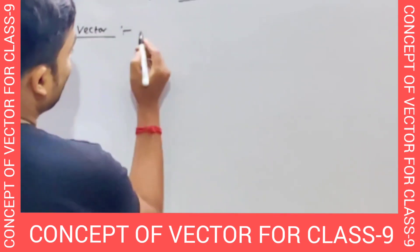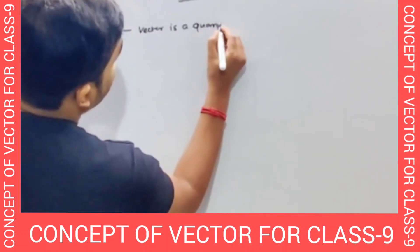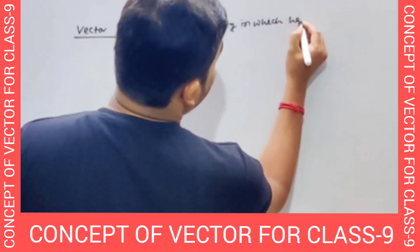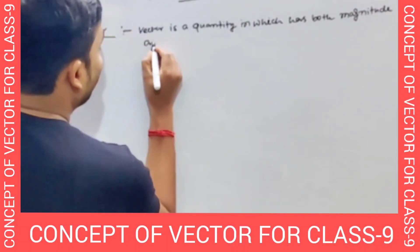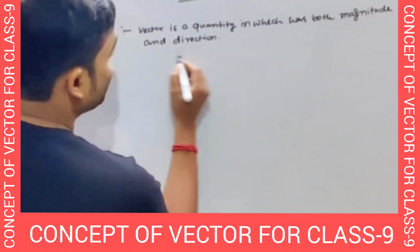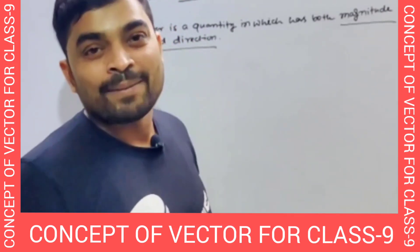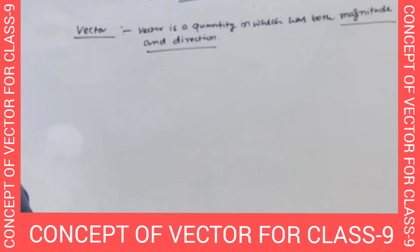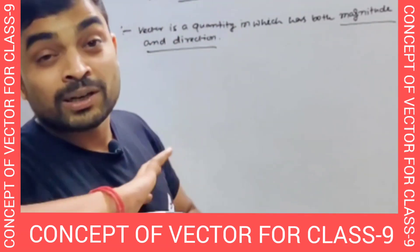Vector is a quantity which has both magnitude and direction. For example, mass is 5 — what is the magnitude part? Actually, mass is a scalar quantity, not a vector. But if we talk about a vector quantity, then it should have a direction obviously. Without the direction, we can never fully define it.